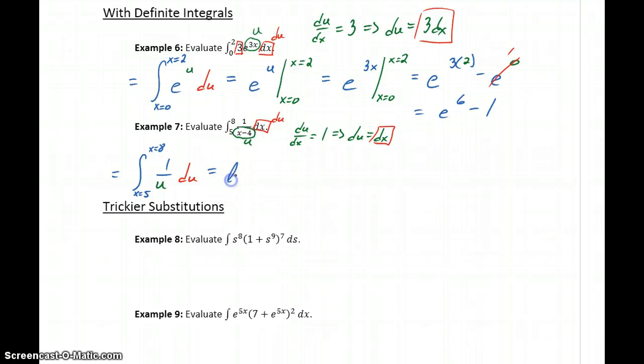So this will become the natural log of the absolute value of u, which then we'll want to evaluate from x equals 5 to x equals 8. So before we make those substitutions, we'll rewrite this as the natural log of the absolute value of x minus 4, evaluated from x equals 5 to x equals 8.